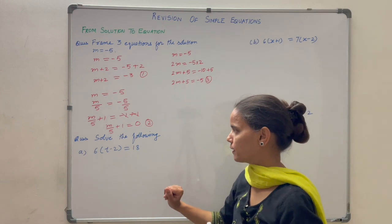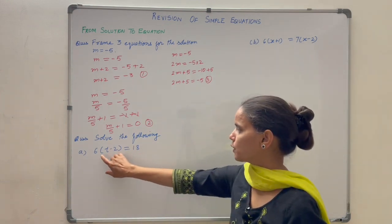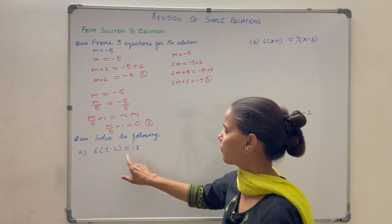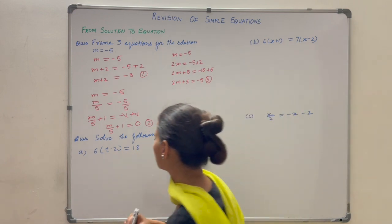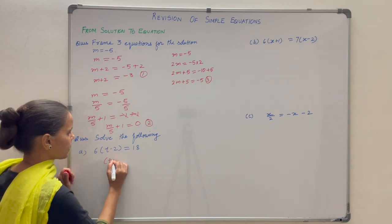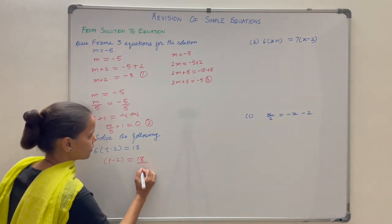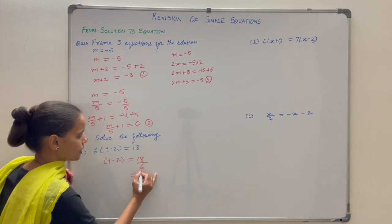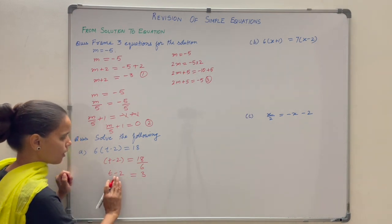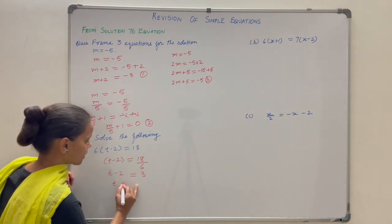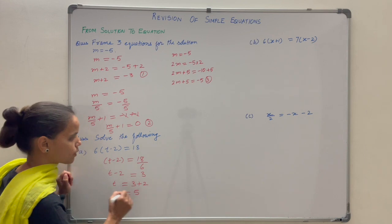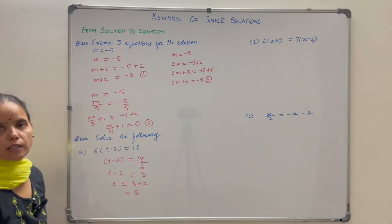Solve the following: 6 times (t minus 2) equals 18. Since 6 is a factor of 18, take 6 to the other side — it divides 18, giving t minus 2 equals 3. Then minus 2 taken to the right hand side becomes plus 2: t equals 3 plus 2 equals 5. This is the solution of this equation.